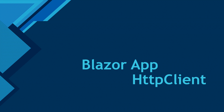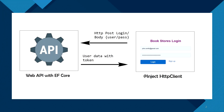Today I'm going to talk about HTTP client — how you can use HTTP client in a Blazor application. For the demo I'm going to use the login page I created in my last demo to make this API call. I'll inject HTTP client into the login component, and towards the end of the video I'll explain why using HTTP client factory is a better option.